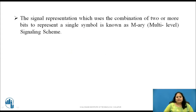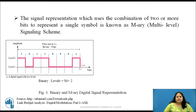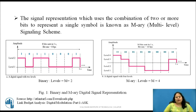Thus, any signal representation scheme which uses the combination of two or more bits to represent a single symbol is known as M-Ary or multi-level signaling scheme. The figure shows the bit stream represented in binary form, where the signal uses only two amplitude levels to represent two symbols 1 and 0. This is a figure showing M-Ary signal representation for M equal to 4, where two bits are combined to form four different symbols represented by four different amplitude levels.